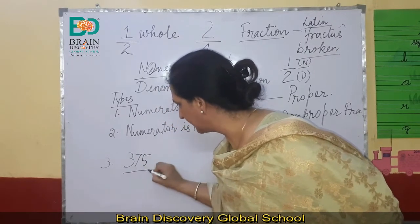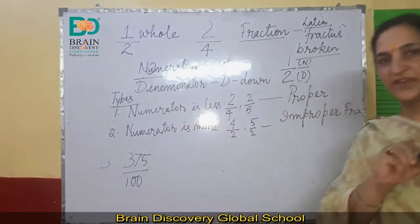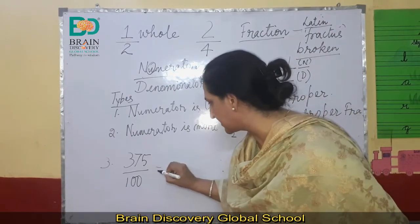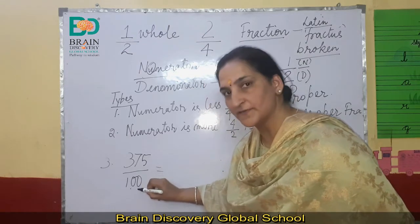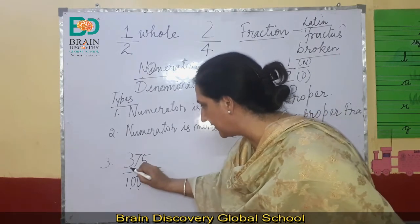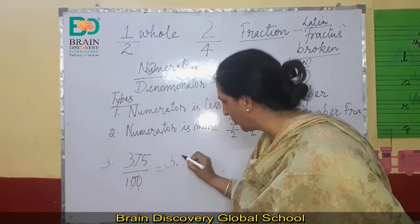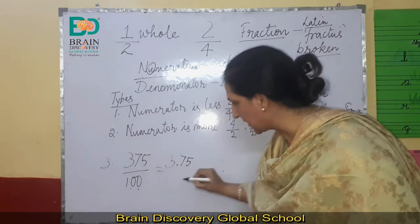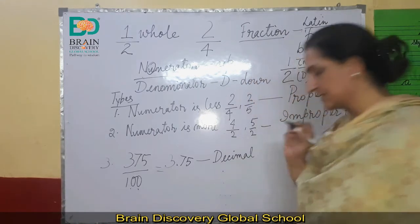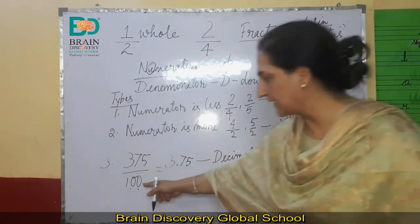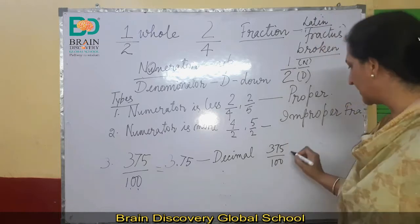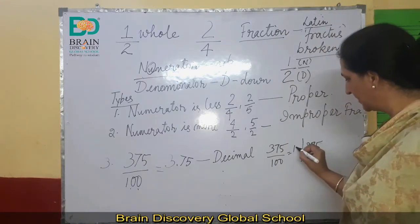The next type: suppose the number 375 divided by 100 is given to you. How will you write this? We count the number of zeros — there are 2 zeros. So from the right-hand side of 375, we count 2 places and put a dot. So we write it as 3.75. Numbers of this kind are called decimal fractions.